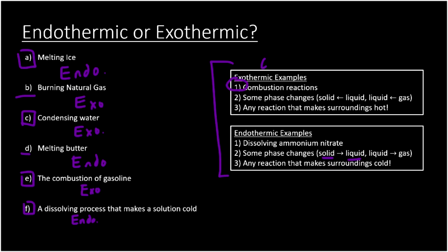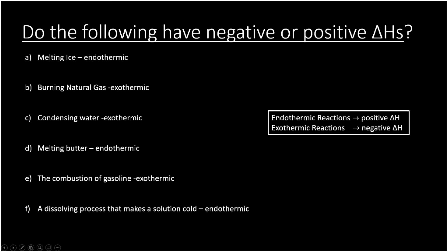Now let's assign delta H signs to those same processes. Any endothermic reaction has a positive delta H, and all exothermic reactions have a negative delta H. Melting ice is endothermic → positive delta H. Burning natural gas is exothermic → negative delta H. Condensing water is exothermic → negative delta H. Melting butter is endothermic → positive delta H. Combustion of gasoline is exothermic → negative delta H. The dissolving process that makes solution cold is endothermic → positive delta H. That's our introduction to endothermic and exothermic reactions.